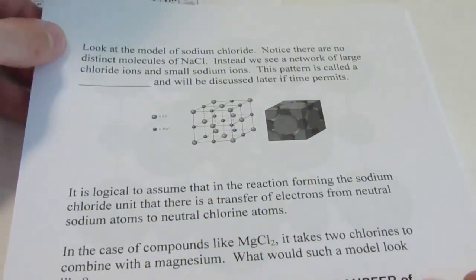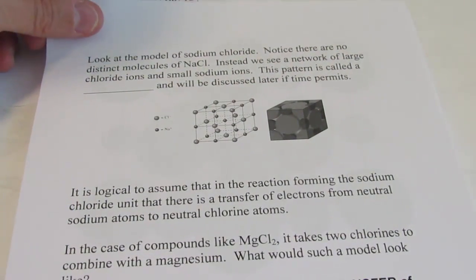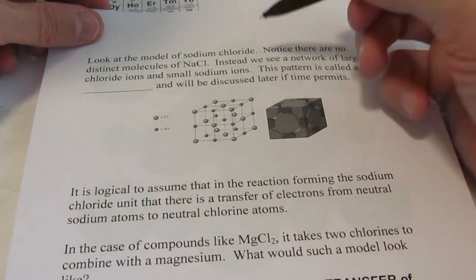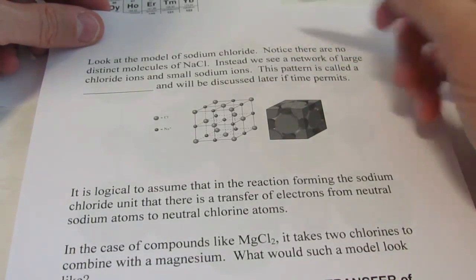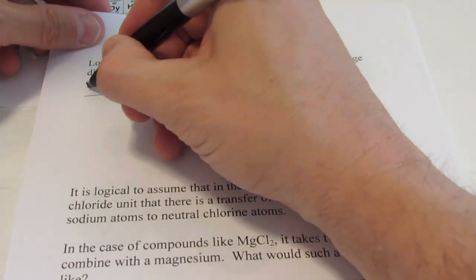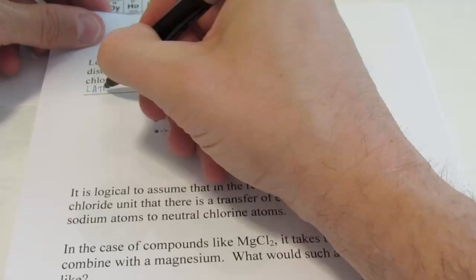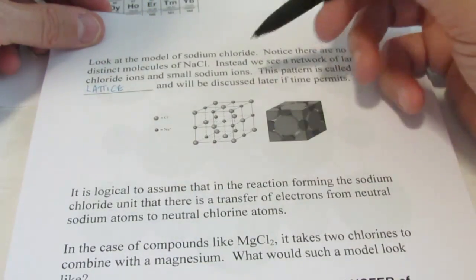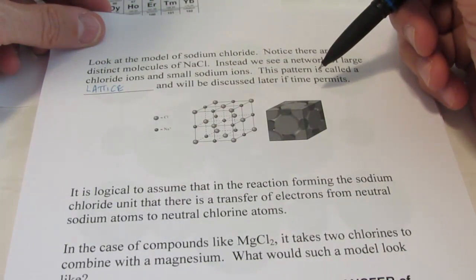Take a look at a model of sodium chloride. Notice that there are no distinct molecules of sodium chloride. Instead, we see a network of large chloride ions and small sodium ions. This pattern is called a lattice. And it will be discussed later if time permits.